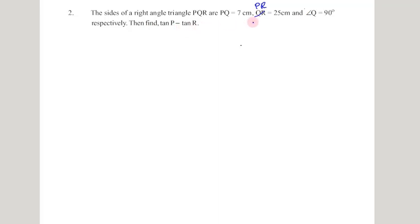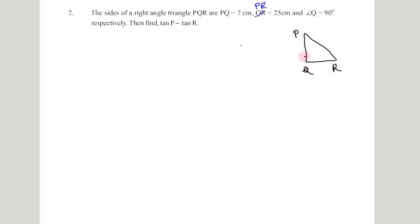We need to find tan P minus tan R. In a right angle triangle PQR, let us take a right angle triangle where the right angle is at Q. They have given the measurement of PQ as 7 centimeters and PR as 25 centimeters.